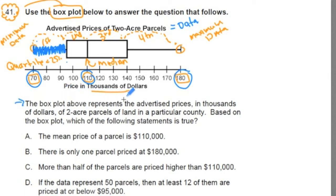The box plot above represents the advertised prices in thousands of dollars of two-acre parcels of land in a particular county. Based on the box plot, which of the following statements is true? Now let's evaluate A, B, C, and D.